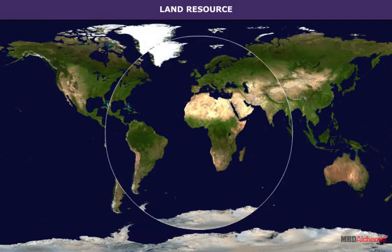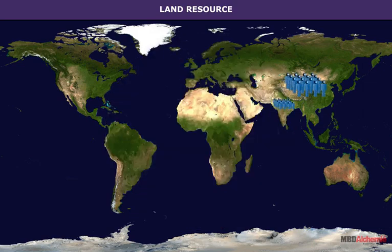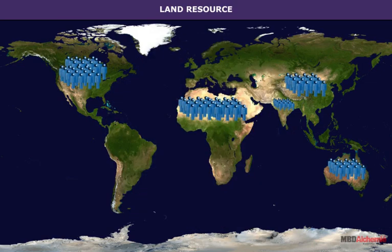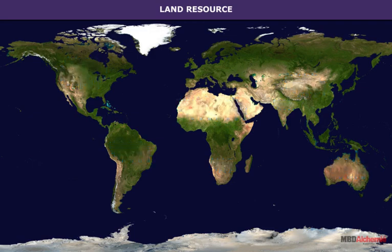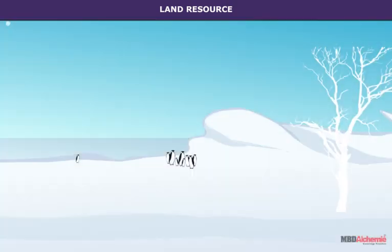Land constitutes only about 30 percent of the total area of the earth. The entire human population of more than 6 billion people live today on land. Of this total population, 90 percent people live on 30 percent of the land area. The remaining 10 percent also live on land but in inhospitable parts like deserts, mountains, grasslands and in extremely cold areas.